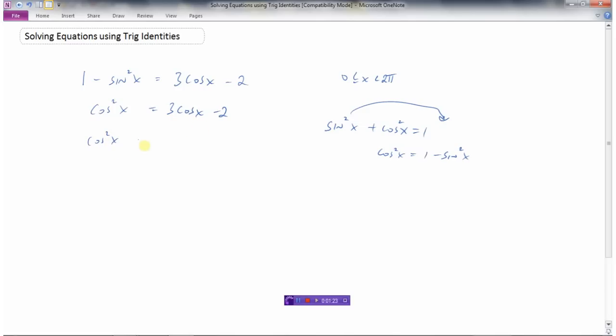This is a quadratic trig equation, so I'm going to set it equal to 0. Now I'm going to factor this. Two numbers that multiply to 2 and add to minus 3 would be negative 2 and negative 1. So (cos x - 2)(cos x - 1) = 0.